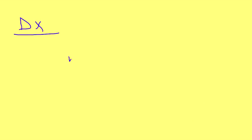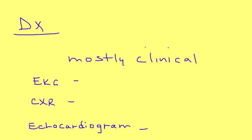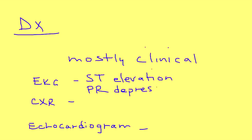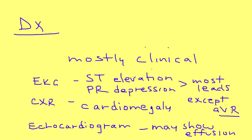Diagnosis is mostly a clinical diagnosis based on symptoms and physical exam findings, but tests you can do include an EKG, a chest x-ray, and an echocardiogram. The EKG will show classic ST elevation and PR depression — very important to remember. This will occur in most leads except AVR, where it will be opposite: ST depression and PR elevation. Chest x-ray will show mild cardiomegaly, and the echocardiogram may show an effusion if there is accumulation of fluid.